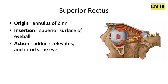The superior rectus muscle is hiding underneath the superior oblique muscle. It also originates from the annulus of Zinn at the back of the orbit, inserts into the superior surface of the eyeball, and it adducts, elevates, and intorts the eye.